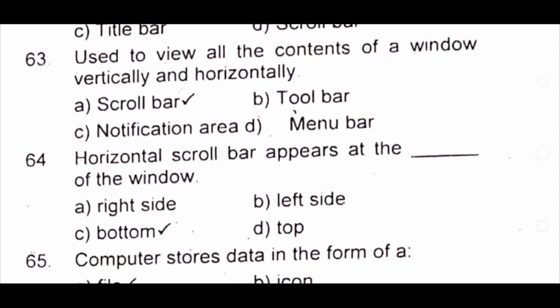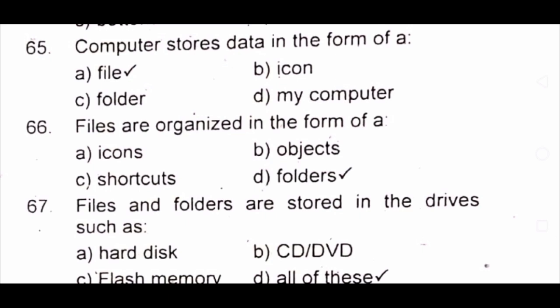Question 64: The original scroll bar appears at the dash of the window. A) right side B) left side C) bottom D) top. The answer is C) bottom. Question 65: A computer stores data in the form of a dash. A) file B) icon C) folder D) my computer. The answer is A) file.